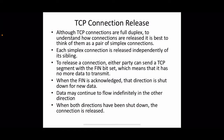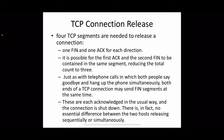When both directions have been shut down, the connection will be released. A connection is released only when both sides are ready to terminate. Four TCP segments are needed to release a connection: one FIN and one ACK for each direction. If host one wants to terminate, it sends a segment with FIN set, and host two replies with an ACK. Then host two also sends a FIN, and host one sends an ACK back.